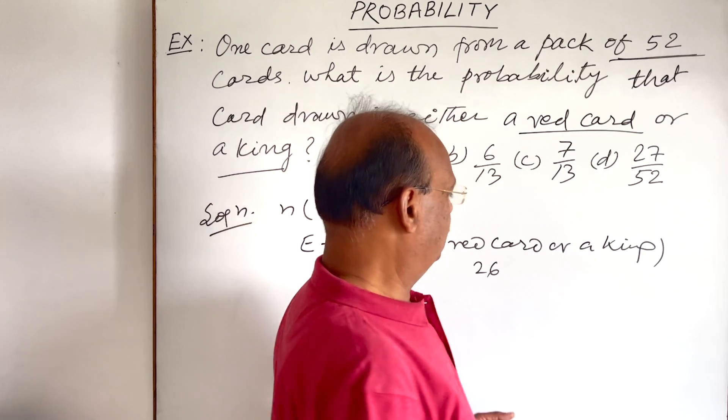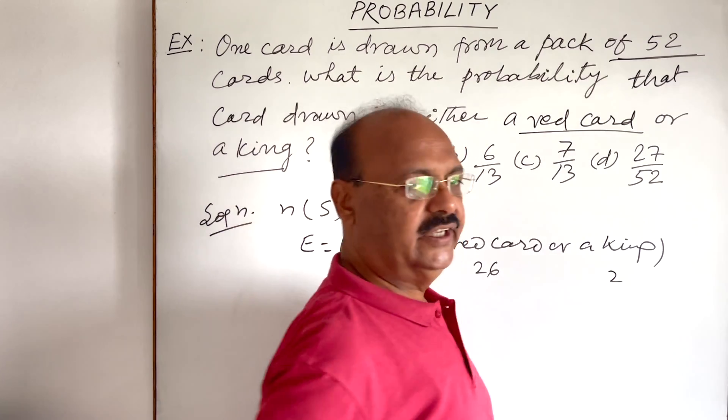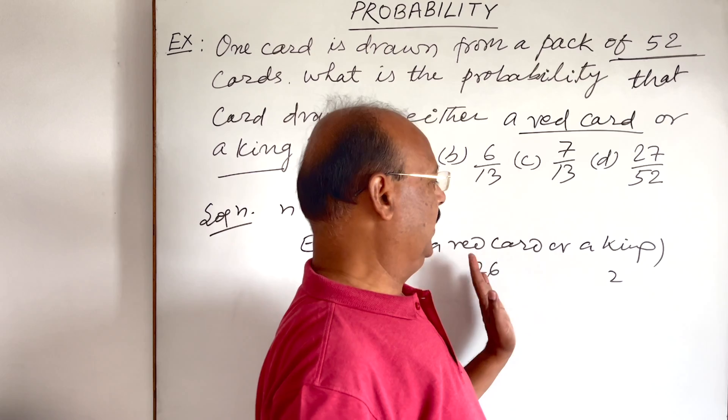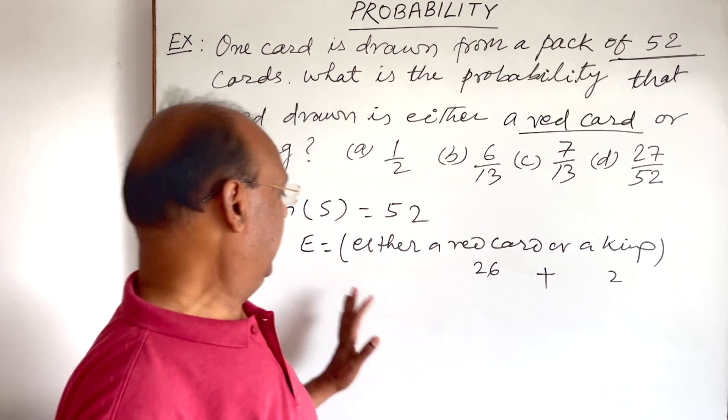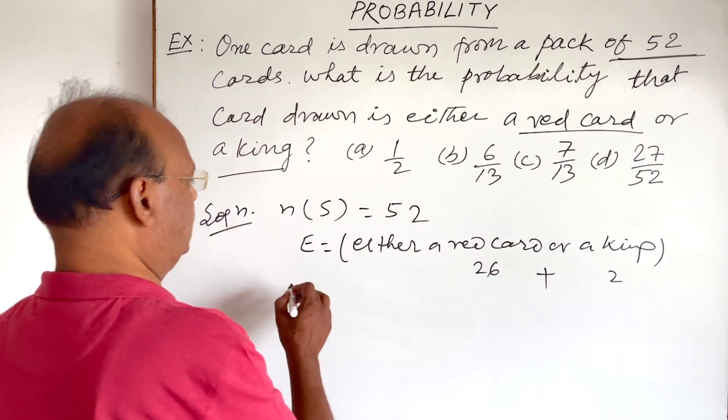So two kings are already in black color and two in red. So in total, n(E) will be 26 plus 2, which equals 28. So therefore, n(E) is equal to 28.